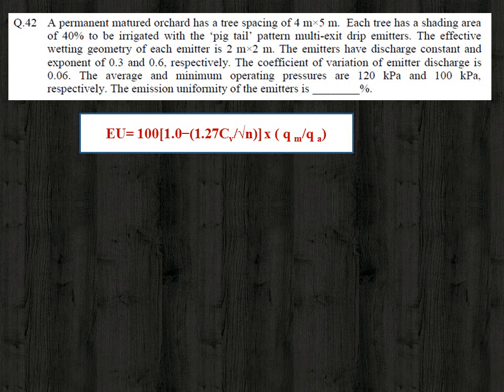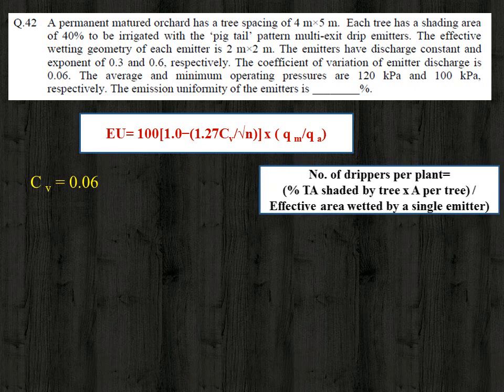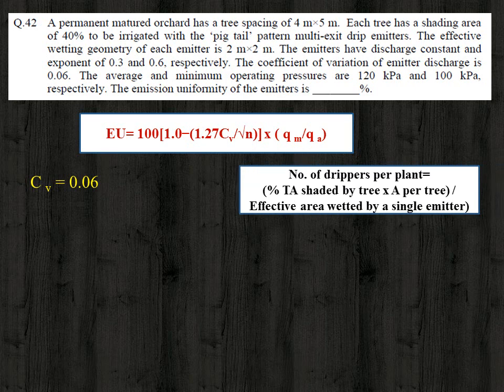Here EU is emission uniformity in percent, CV is the coefficient of variation, n is the number of drippers per plant, qm is the minimum discharge, and qa is the average discharge. CV is given as 0.06. To find the number of drippers per plant, we use: n = (% area shaded × area per tree) / effective area wetted by a single emitter.